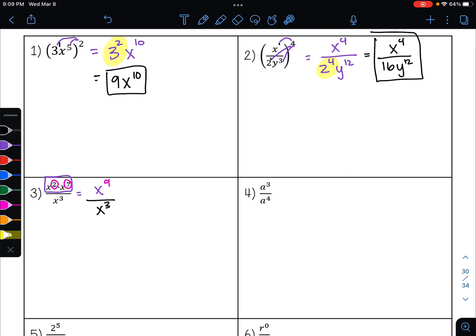And then I still have my denominator of x cubed. So now I have a quotient. So I'm dividing. And so I want to keep my base of x and I want to subtract my exponents. Numerator minus denominator. 9 minus 3. And so that's going to give me an answer of x raised to the 6th power.